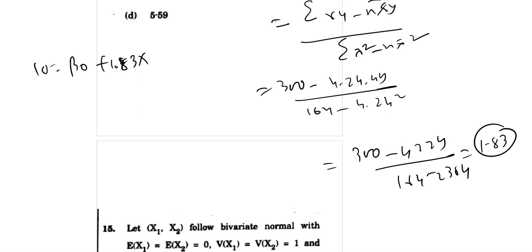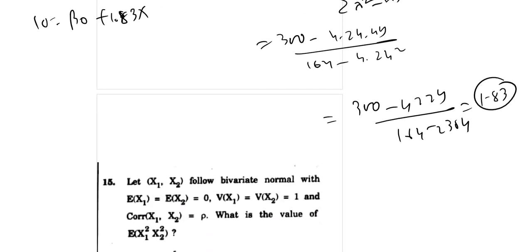So beta 0 is the intercept nikaal sakte hain. Substituting the given values, beta 0 equal to 44, 1.83 into 24. 44 is 43.9 to 0.08.